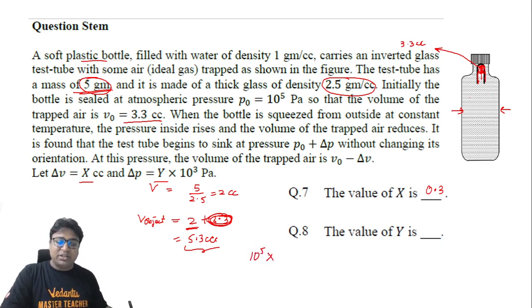The final pressure is something that we don't know, and the final volume would be 3. So the final pressure becomes equal to 1.1 into 10 raised to power 5. So the increase in pressure becomes equal to 0.1 into 10 raised to power 5, which becomes equal to 10 into 10 raised to power 4.